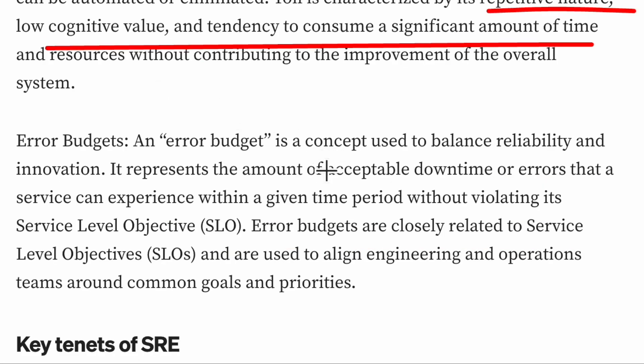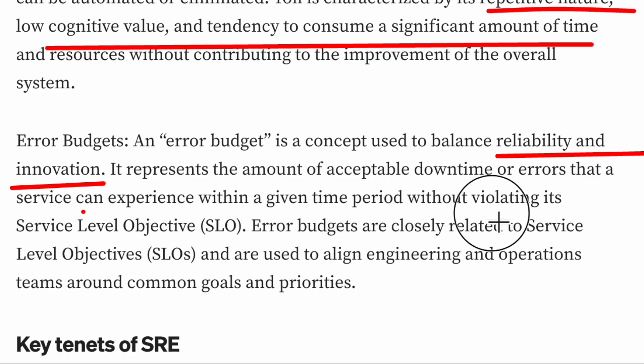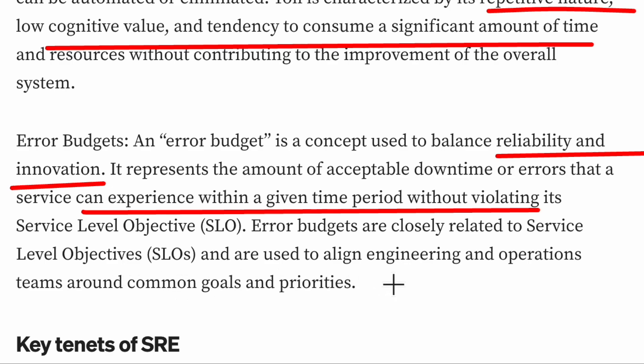Error budget is a concept used to balance reliability and innovation. We cannot have a system that is always 100% up and running — there is an acceptable downtime, and that is the error budget. It represents the amount of acceptable downtime or errors that a service can experience within a given time period without violating its SLO. Error budgets are closely related to SLOs and are used to align engineering and operations teams around common goals. Rather than aiming for 100% uptime and wasting resources, we define SLOs that specify how much uptime is required and use error budgets to arrive at that balance.